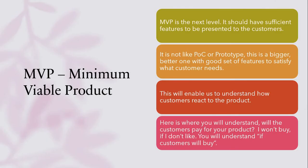The next one is the Minimum Viable Product. This is the next level. It should have sufficient features that you can present to the hands of customers. It is not like the POC or the prototype — this is bigger and has to have a good set of features that can definitely attract customers. It should present what the customer needs and satisfy those needs in a better way. This will enable us to understand how the customers react to the product and whether they will pay money for it.